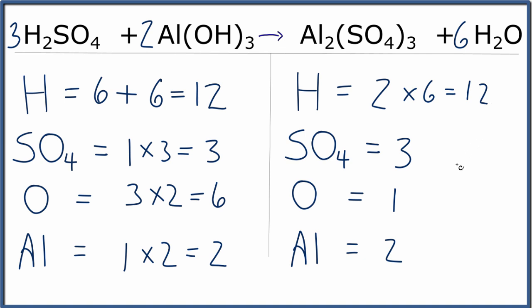And then for our oxygens, we now have the one times the six. That gives us six oxygen atoms. And everything's the same. We've balanced the equation.